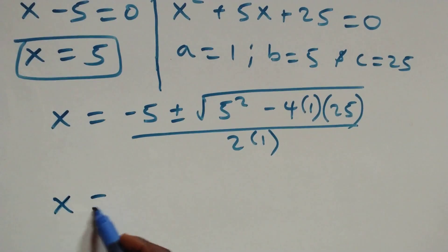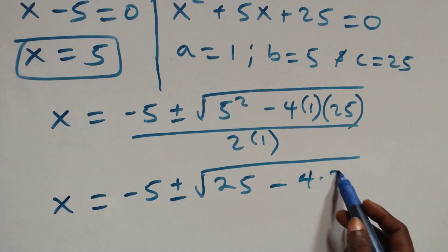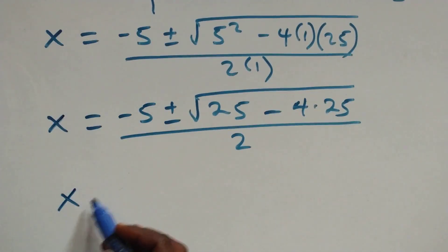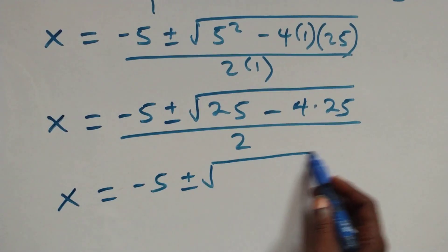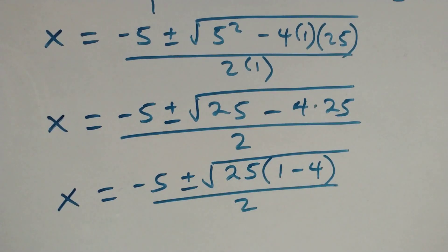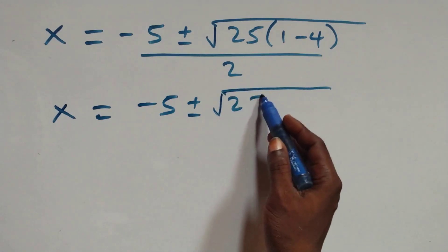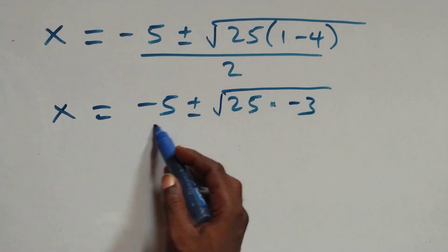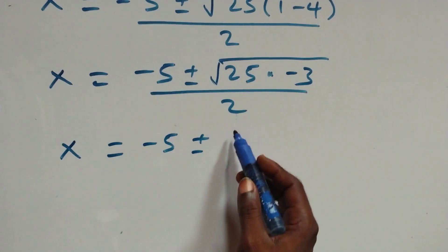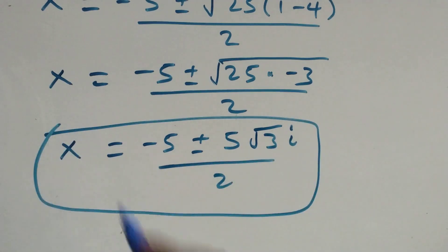For the quadratic x squared plus 5x plus 25 equals zero, we have a equals 1, b equals 5, c equals 25. Applying the quadratic formula: x equals minus 5 plus or minus square root of 25 times 1 minus 4, that's minus 3, over 2. This gives x equals minus 5 plus or minus 5 times root of minus 3, over 2 — two complex solutions.